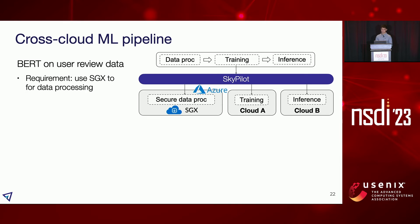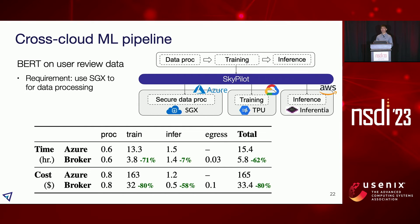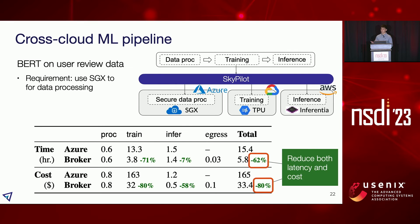Now let me switch to a few examples. The first is an ML pipeline with three stages: secure data processing using Intel SGX, fine-tuning a BERT model, and offline inference. For the second stage, we allow the broker to use Google's TPUs or other clouds' GPUs. For inference, we allow AWS Inferentia and other GPUs. The baseline is single-cloud Azure execution since it's the only cloud offering SGX. The broker uses all three clouds to take advantage of their unique hardware, and even after accounting for egress time and cost, the broker execution is much faster and cheaper.